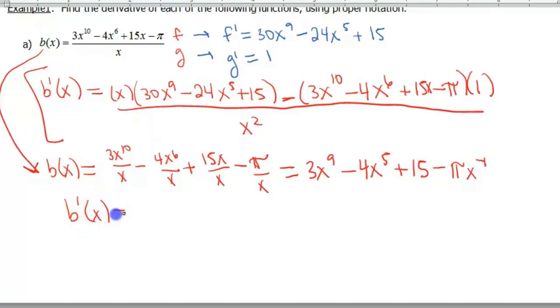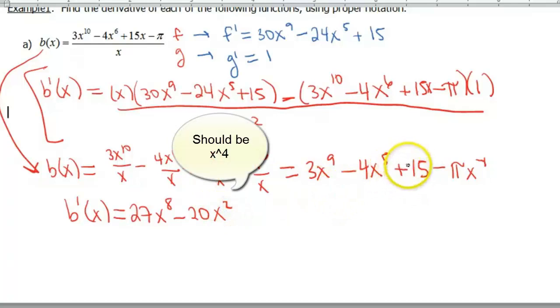So now, b'(x) is gonna give us, apply the power rule to each piece, and remember these constants just get multiplied. So 3 times 9 gives us 27x^8, minus 4 times 5 gives me a 20x^4. Well, let's see what happens to that 15. 15's a constant, so that piece drops out, so then that one goes away. So we have minus π times negative 1, so that's a positive π, and then x^(-2), because negative 1 minus 1 gives us negative 2, there we go.